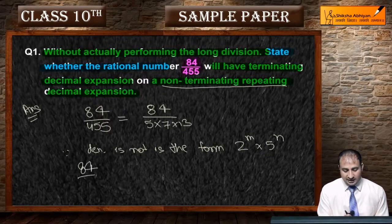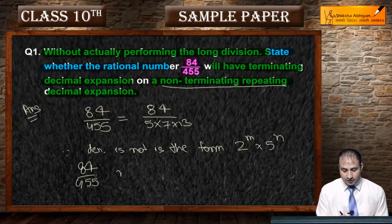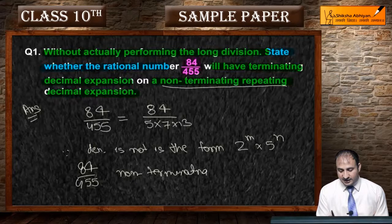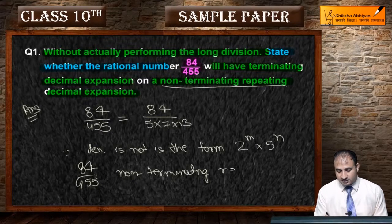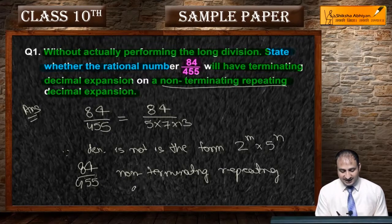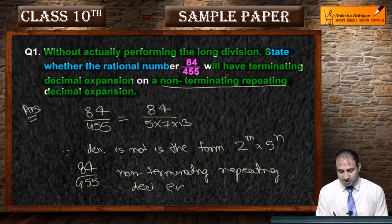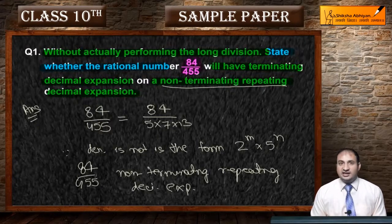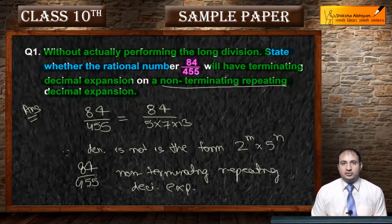So, 84 by 455 has non-terminating repeating decimal expansion. Yeh decimal expansion iska non-terminating repeating type ka hoga.